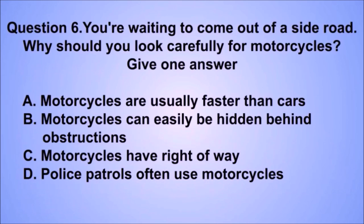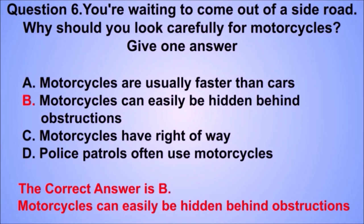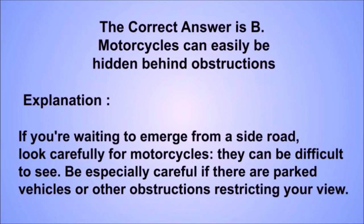Question 6. You're waiting to come out of a side road. Why should you look carefully for motorcycles? The correct answer is B: Motorcycles can easily be hidden behind obstructions. If you're waiting to emerge from a side road, look carefully for motorcycles — they can be difficult to see. Be especially careful if there are parked vehicles or other obstructions restricting your view.